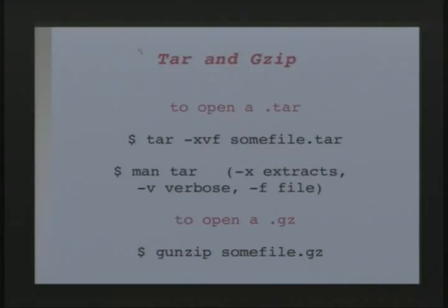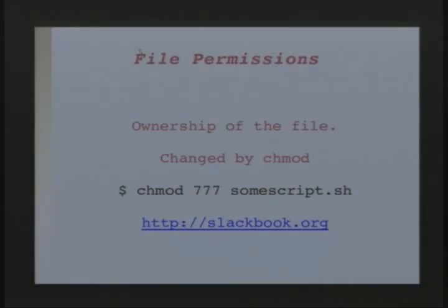To open a tar, you do this command, and if you do 'man tar' it tells you what those little options are. To open a .gz you can use gunzip on the file. File permissions are really important. If you want to make everything writable, editable, and executable by everyone, it's 777. So if you write a script, which is just a list of commands, you put it to 777 and it works.